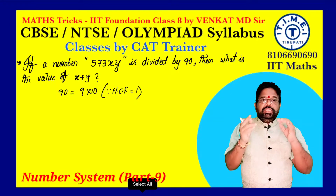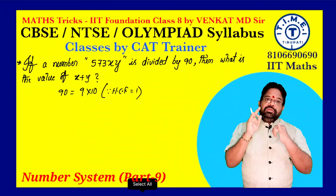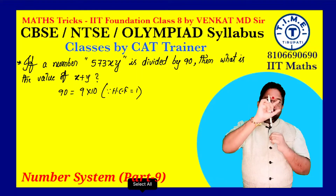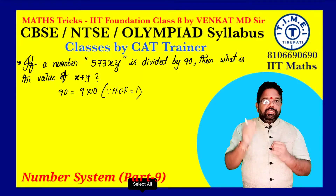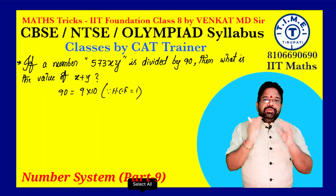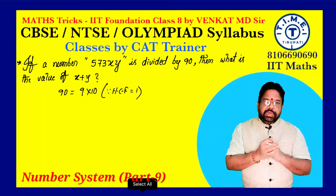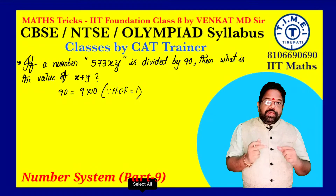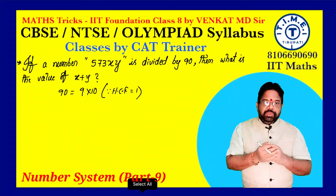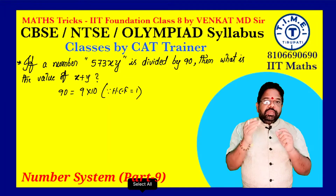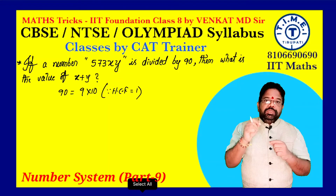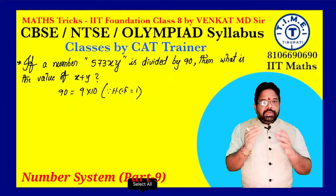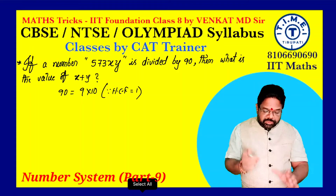What is the divisibility test by 10? The last digit — the unit's place value — must be 0. Then that number is exactly divisible by 10. In this number 573xy, what is the unit's place value? Y. So according to our condition, Y must be 0 for the number to be divisible by 10. So Y equals 0.